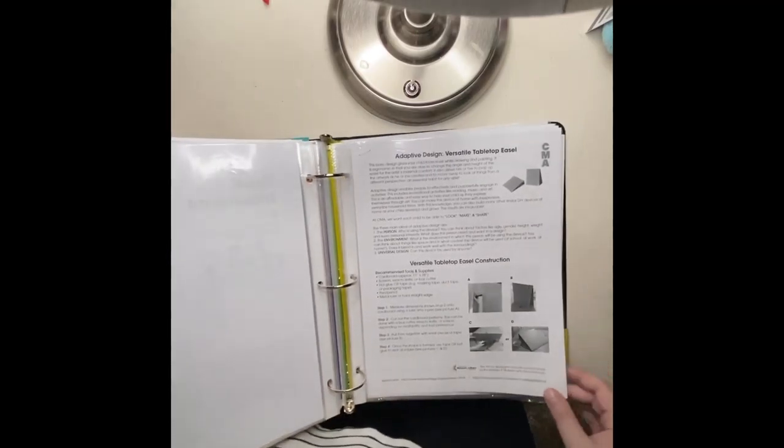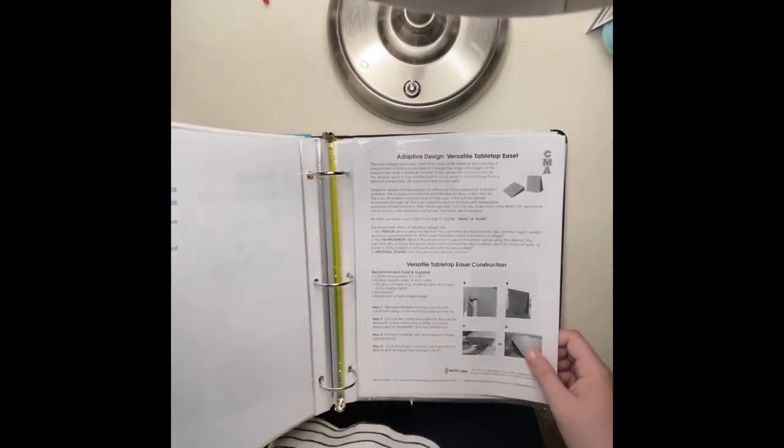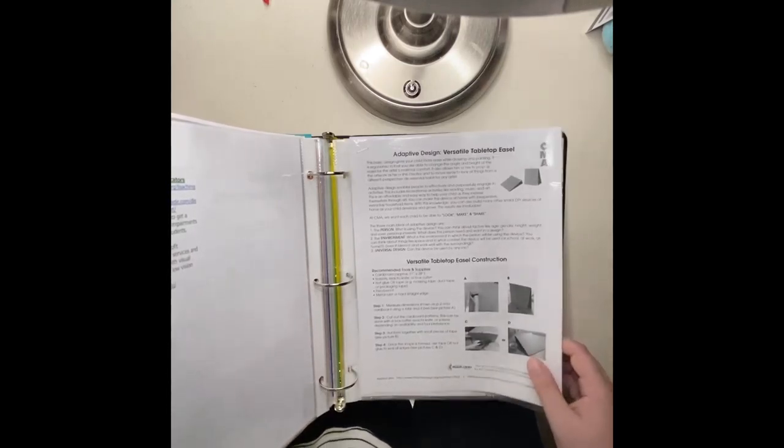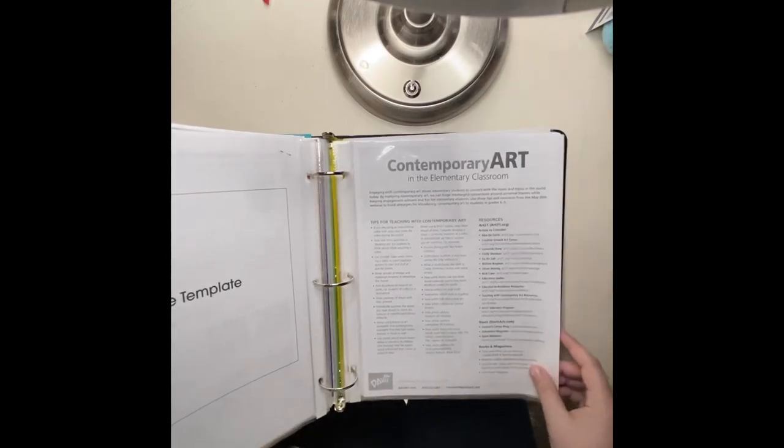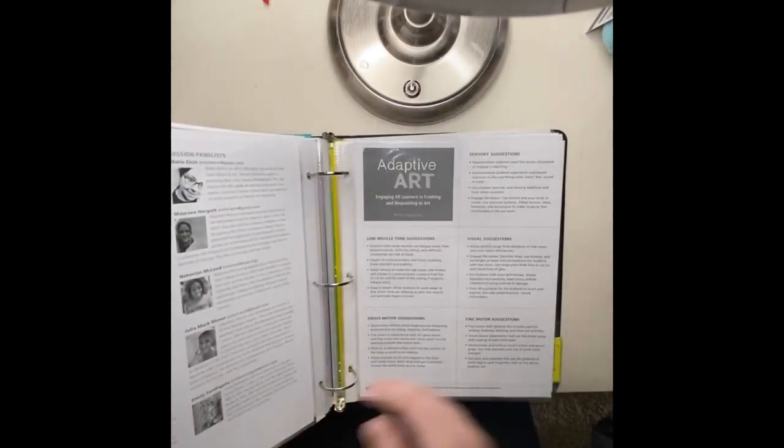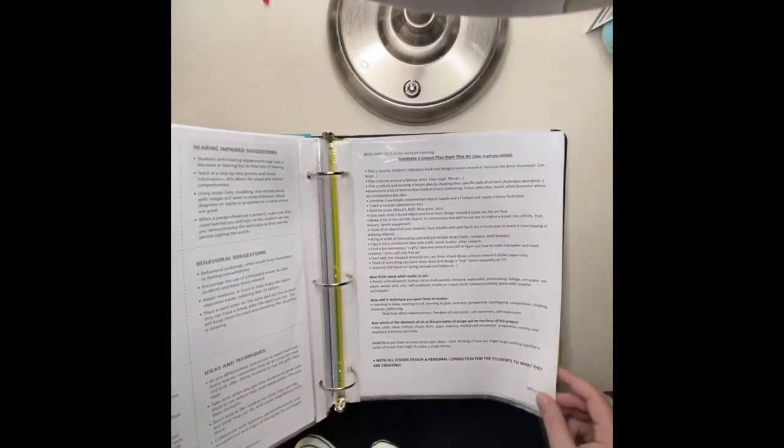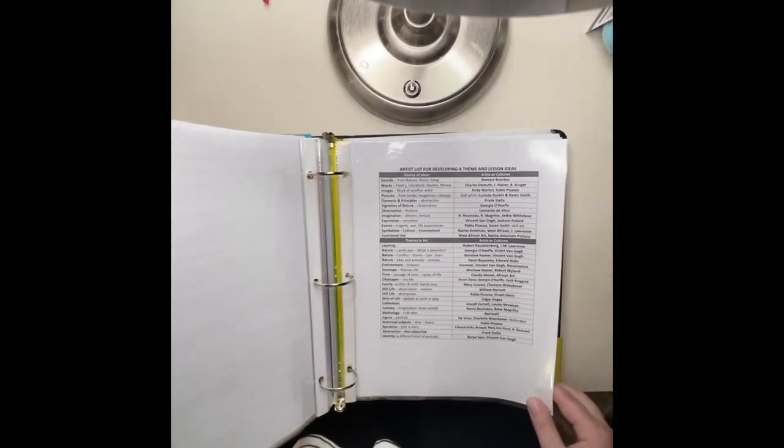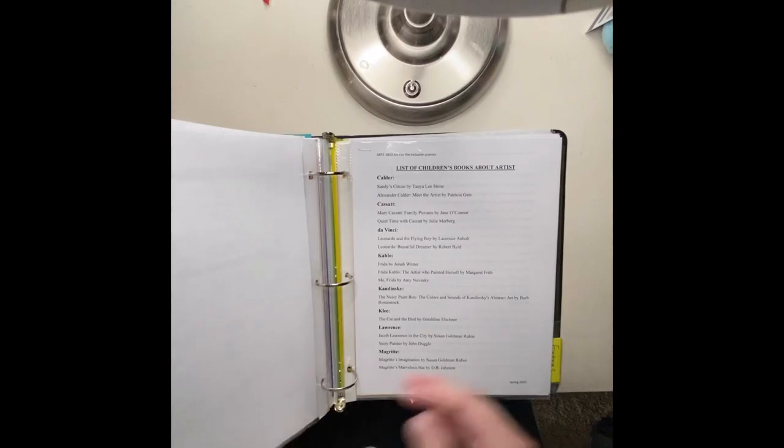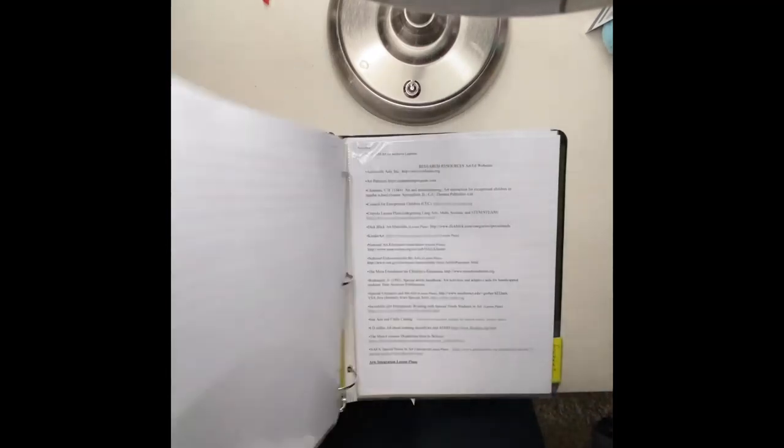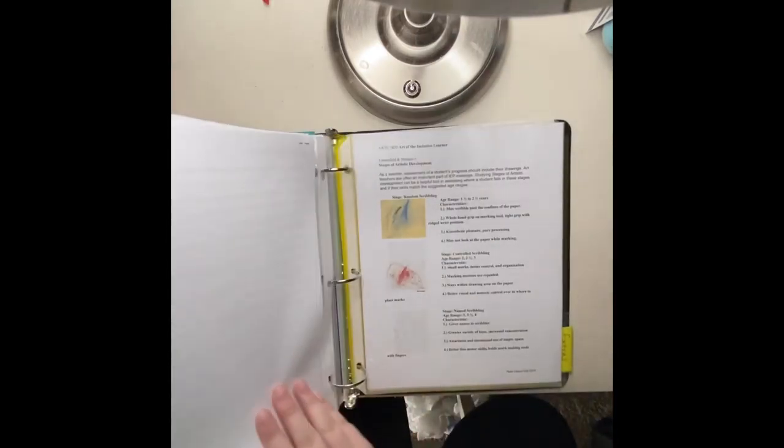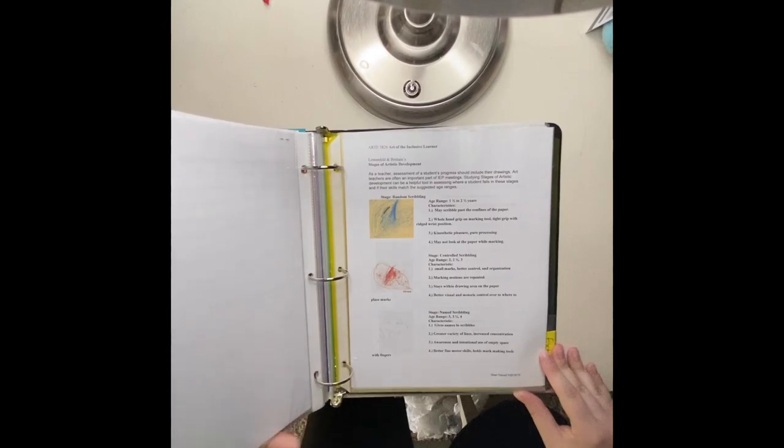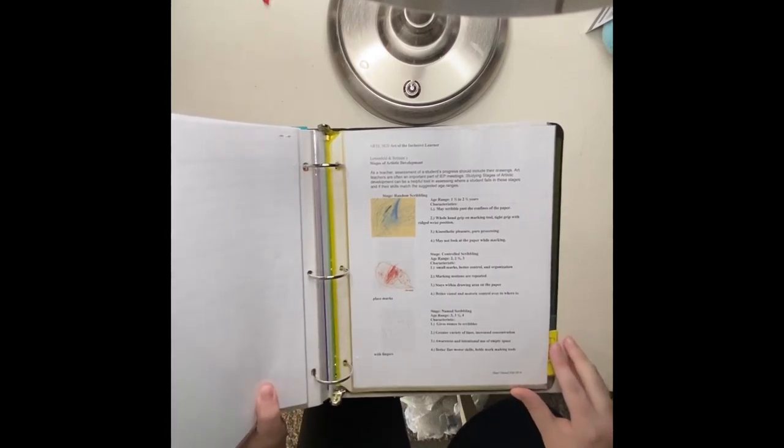So here is, I believe this should have gone in the studios, but here's something about the adaptive design. Here's about contemporary art in elementary classrooms. Here's more handouts that we just used. How to generate a lesson plan from thin air. The artist list, the children's book, and then resources and research that we could look up.